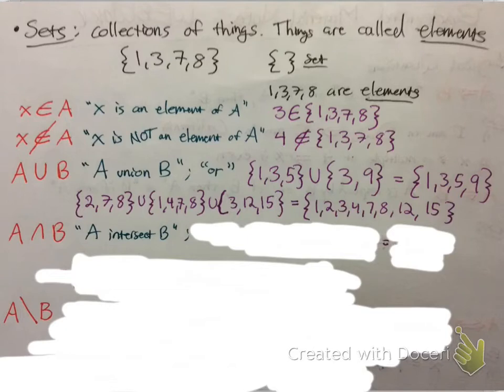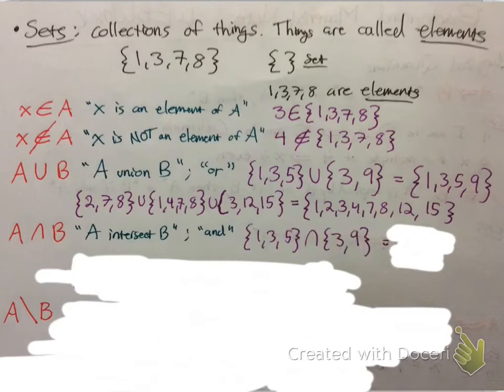The intersect sign — it kind of looks like an n — means A intersect B, and that means 'and' in math language. An example: if we have set {1, 3, 5} intersect {3, 9}, what do those two have in common? Only what they share, and that is the number 3. Make sure you include the set notation.